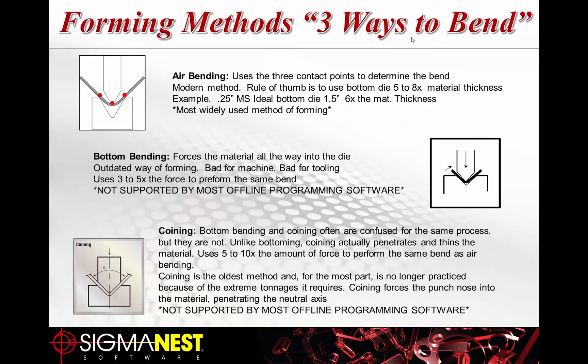Coining is often confused with bottom bending, but what coining actually does is push the material all the way down to the point of the die and then continue pushing until you imprint the radius into the material — actually stamping with the punch into the material, thinning it around the curve. This uses five to ten times the force of air bending, is very rough on the tooling, and is not recommended.